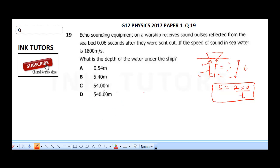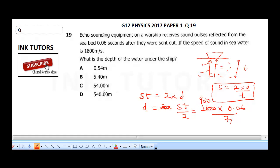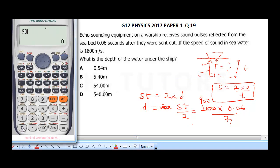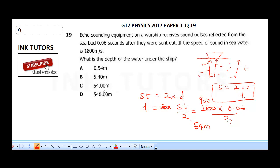So, that is why we're multiplying it by 2. To get our distance, we're going to do st is equal to 2 times d. Therefore, d will be s times t over 2, which is our speed is 1,800. Our time is 0.06 divided by 2. So, 2 here is 1, 2 in 1,800 is going to give us 900. When you do 900 multiplied by 0.06, that's 54. So, our answer is 54 meters. So, the correct answer is C.